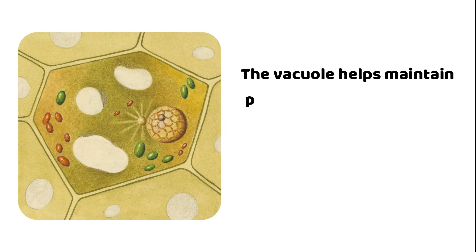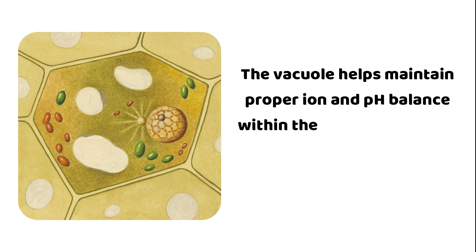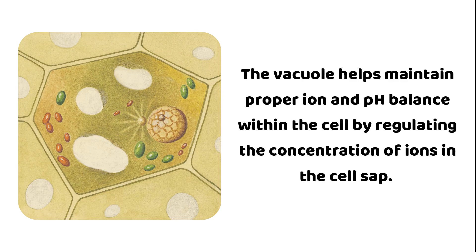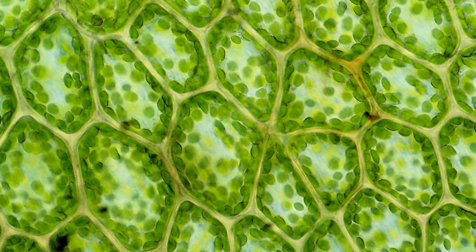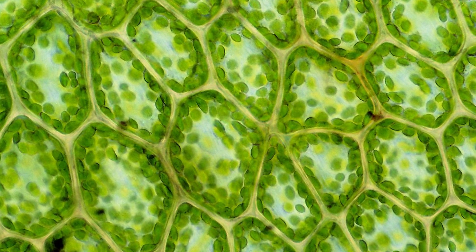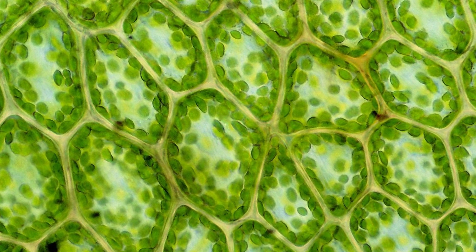Maintaining cellular balance. The vacuole helps maintain proper ion and pH balance within the cell by regulating the concentration of ions in the cell sap. This is crucial for various cellular processes and for ensuring the cell's overall health.